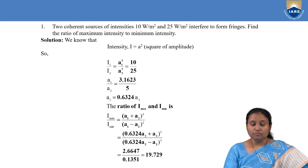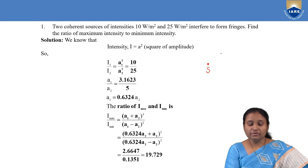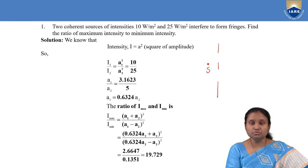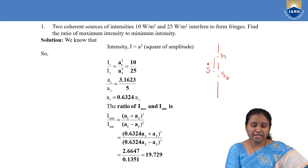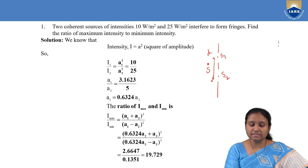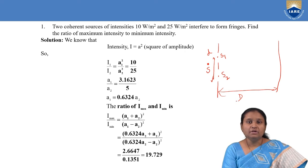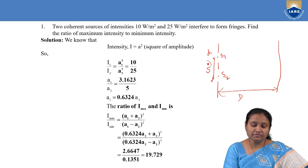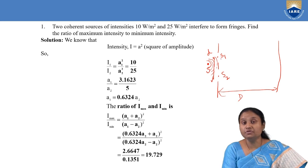In Young's double slit experiment, what Young has done is he has taken a single source of light, and light from that single source he made pass through two slits. These two slits are kept very close to the source and they are separated by a distance small d, and then we keep one screen from these two slits at a distance of capital D. From this point source S, we have a spherical wavefront coming out, and then the spherical wavefront falls on these two slits and there will be division of wavefront.